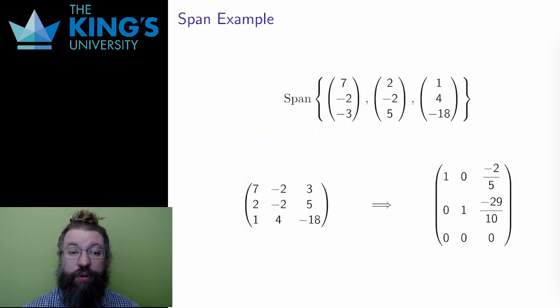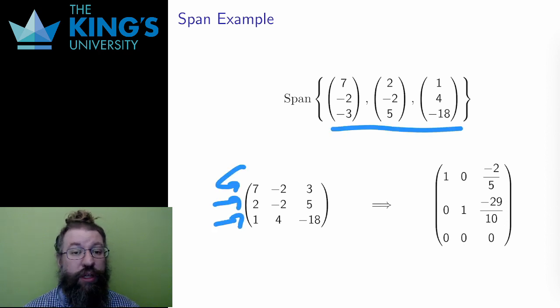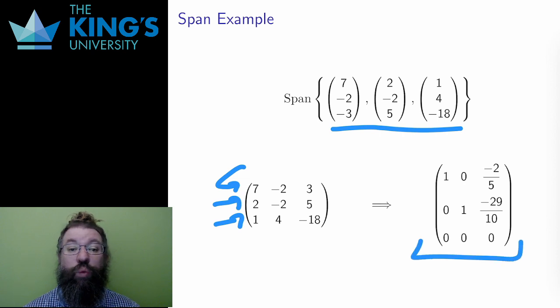Here is a second example. Again, three vectors in R3. I put them into a matrix as rows and I row reduce by computer. I get two leading ones. So there is one redundancy. I only need the first two vectors. The third is redundant.